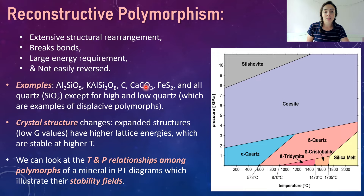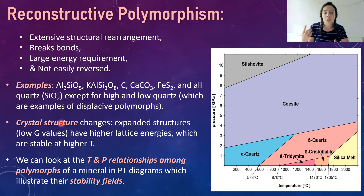Why might some polymorphs favor high temperatures or high pressures, and some favor low temperatures and pressures? These crystal structure changes show some trends. Expanded structures, or polymorphs with low specific gravity, have higher lattice energies and are stable at higher temperatures. Specific gravity is basically relative density — as with galena versus halite, galena feels much heavier even at the same size because it has higher specific gravity.